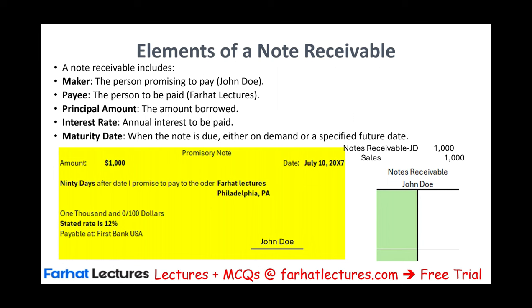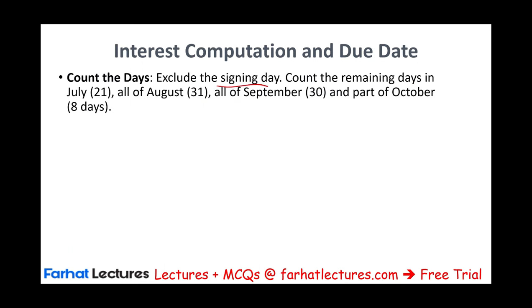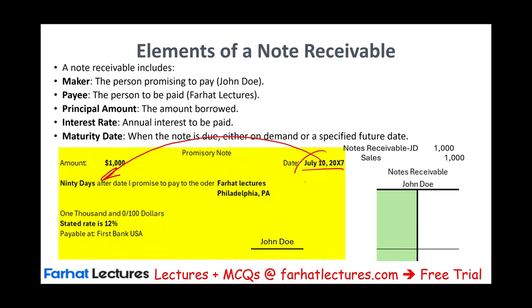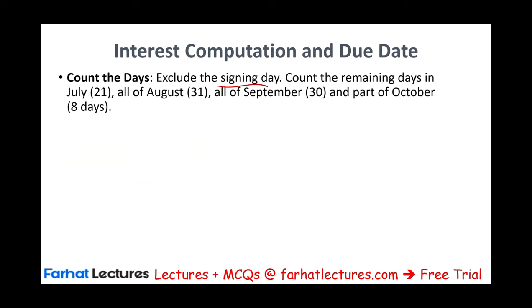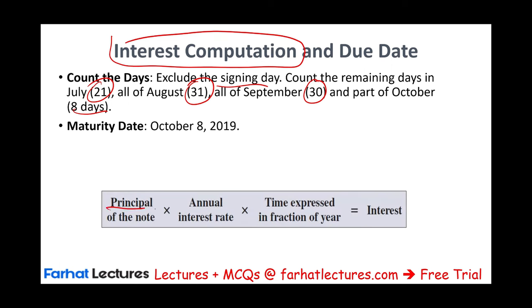When you have a note, you must compute two things: the due date and the interest amount. The due date on this loan is 90 days from July 10th. You exclude the signing date, so you start from July 11th — that's 21 days remaining in July, plus 31 days in August, plus 30 days in September, and you need 8 days in October. Therefore, the due date is October 8th. The interest formula is Principal × Interest Rate × Time, expressed as a fraction of a year — I call this PIT.